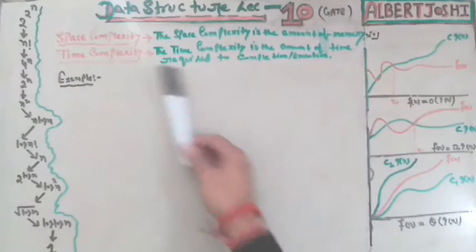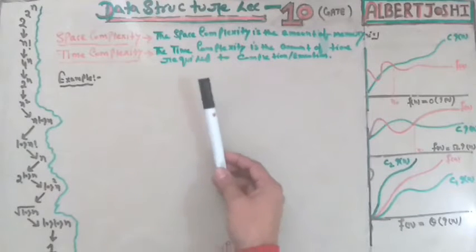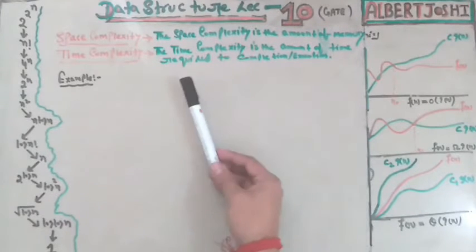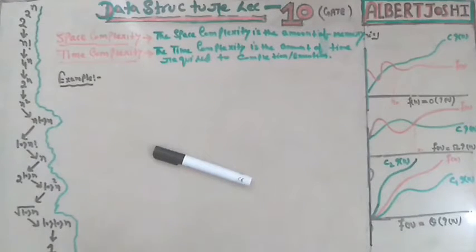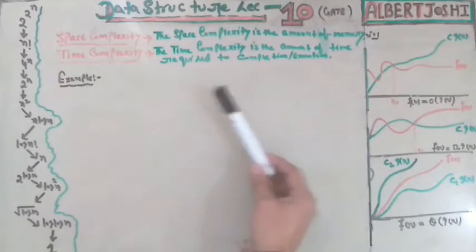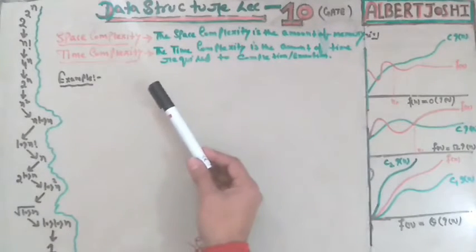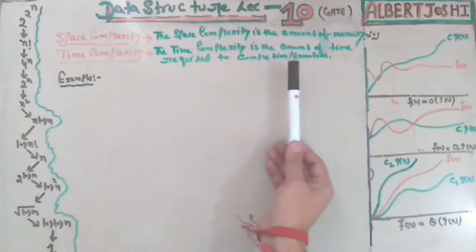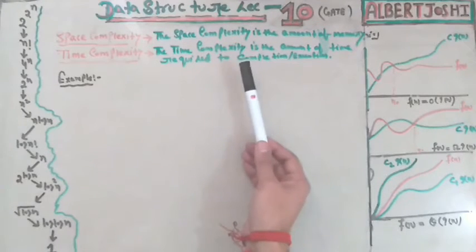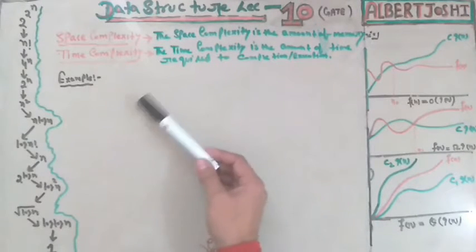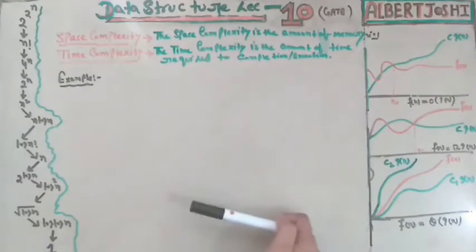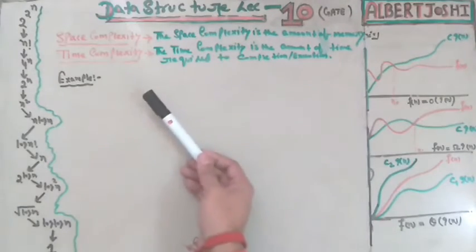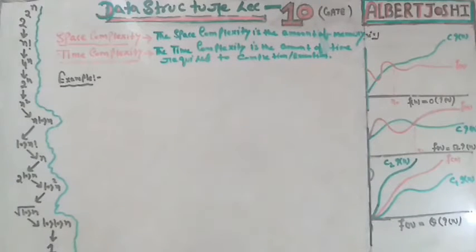The second concept is time complexity. Time complexity is the amount of time required for the completion or execution of any code. Whenever you write any code, time complexity tells us how much time it is taking to execute — that is the time complexity. Now I will show you some examples to clear your concept.